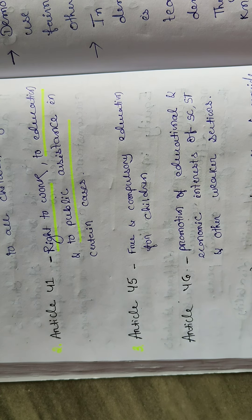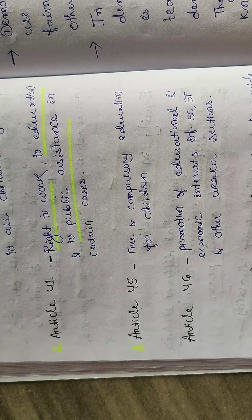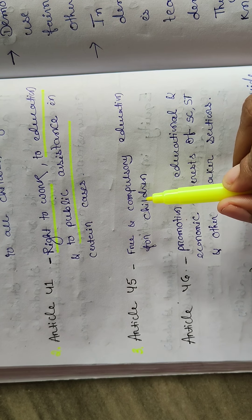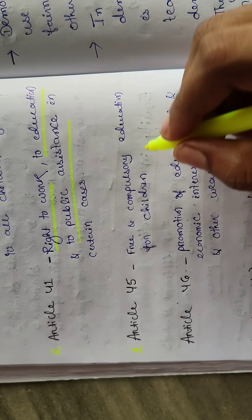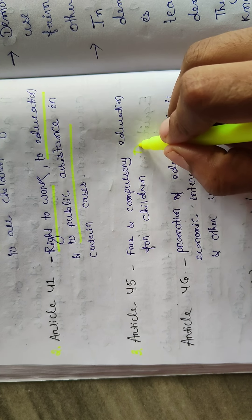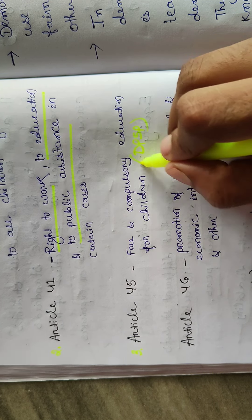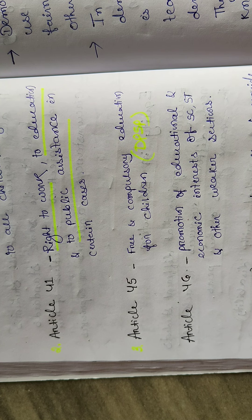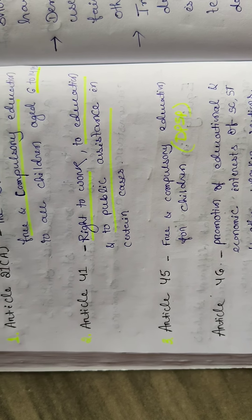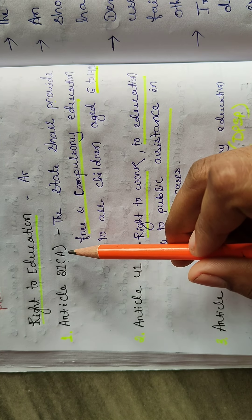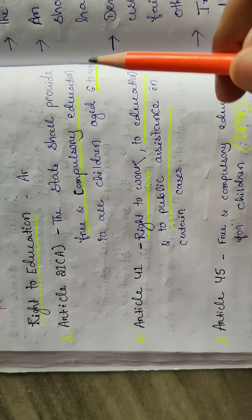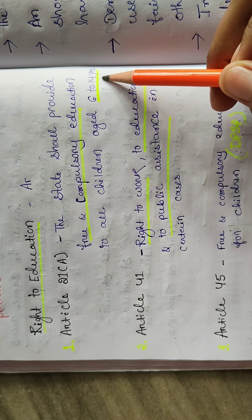The third one is Article 45, which says free and compulsory education for children. Article 45 also states free and compulsory education for children. This comes under DPSP — Directive Principles of State Policy. So Article 21A gives free and compulsory education to children of age 6 to 14 years.